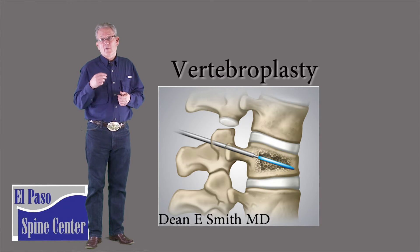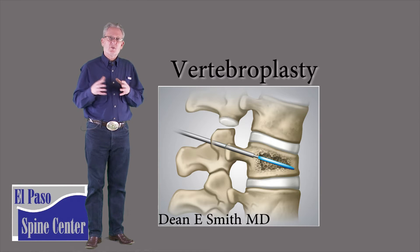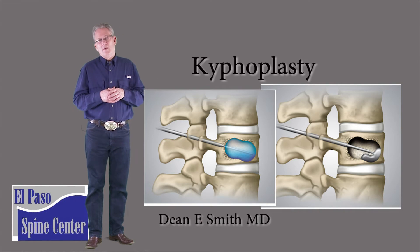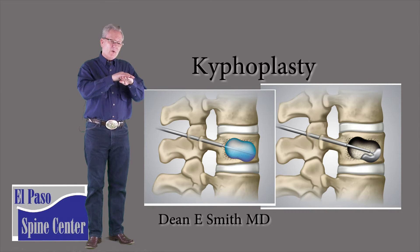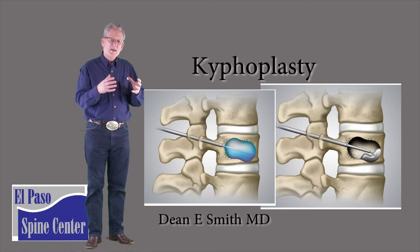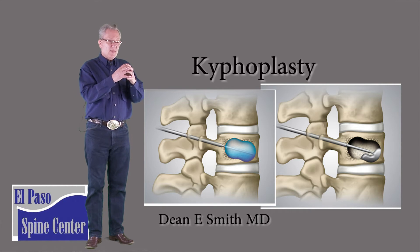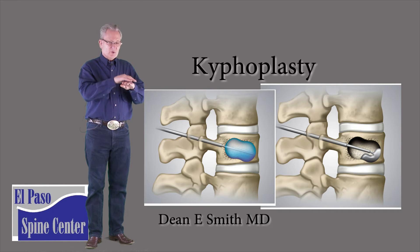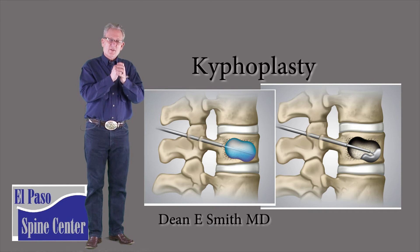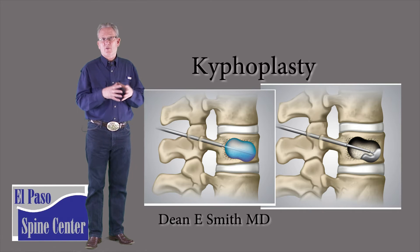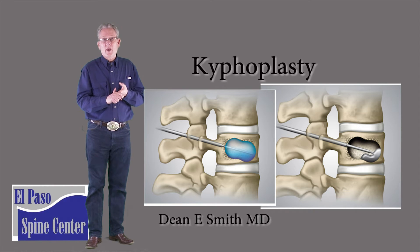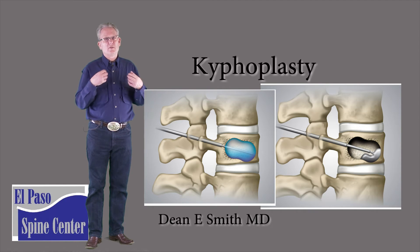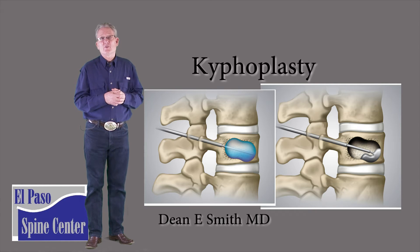Because of this, the vertebroplasty is not commonly used and has essentially been replaced by the kyphoplasty. The kyphoplasty uses a needle to place a balloon, and then we blow that balloon up trying to restore the normal height and alignment of the vertebral body. That void that is created we fill with some very thick cement. The thick cement would be less likely to travel to other locations, but it still can — it is still a liquid and it can still get into the blood, embolize, and go to the lungs, heart, or brain and cause a stroke.